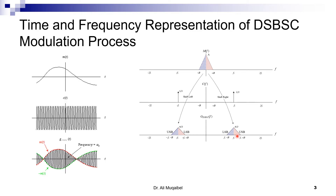Now we can answer why this is called Double Sideband. Looking at the positive frequencies, the original bandwidth was B but it has now become 2B — hence the name Double Sideband. We will see later why it's called Suppressed Carrier. If you want to see things in the time domain rather than frequency, let's say this is the message and this is the carrier.